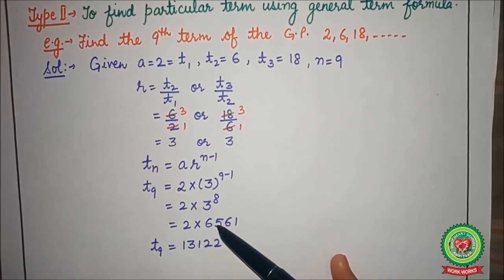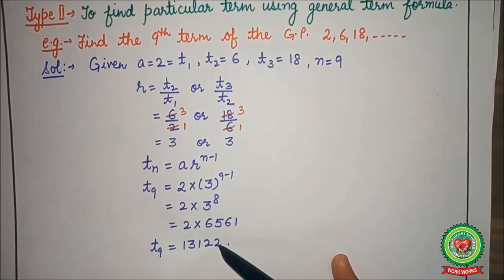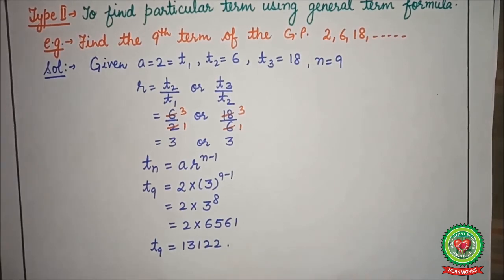Finally, on multiplying with 2, we will get the 9th term, that is 13122. In this way we can find any term of the GP series using general term formula if we know the value of a and r.